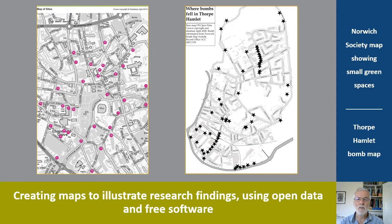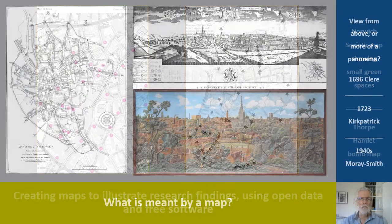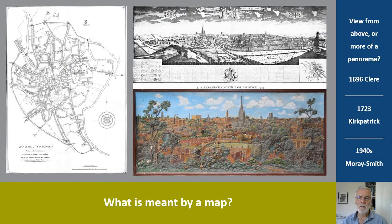There are notes to accompany the talk available on the Historians page of the Norwich Society website. We normally think of a map as a straight aerial view, but as some early maps show, something more akin to a panorama was quite common then. Panoramas are still in vogue, as this 1940s example by John Murray Smith of Norwich shows. It was recently saved and restored by the Norwich Society and can be seen in the Maids Head Hotel, but you probably wouldn't think of it as a map.